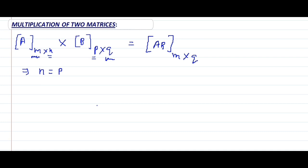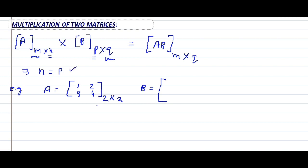For example, let matrix A be of order two cross two: one, two, three, four. And another matrix B — according to the condition that the number of columns of the first matrix equals the number of rows of the second matrix — let matrix B be: one, two, three, zero, one, four. Its order is two cross three. So the number of columns of the first matrix equals the number of rows of the second matrix, meaning we can multiply these matrices.